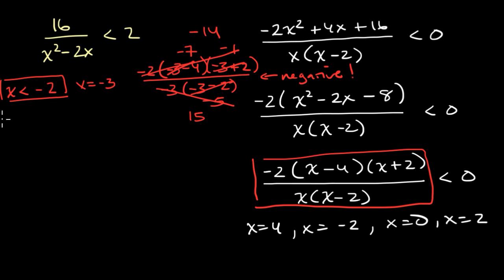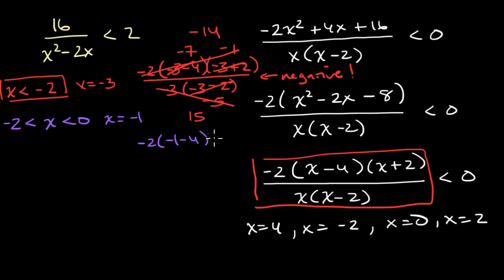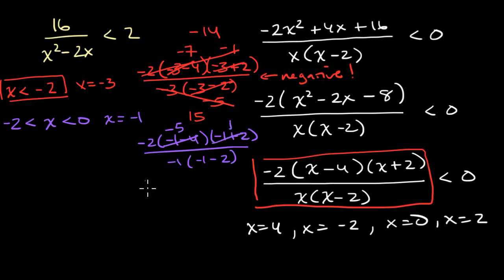Next, let's test the interval between negative two and zero using x equals negative one. We get negative two times (negative one minus four) times (negative one plus two), all over negative one times (negative one minus two). Numerator: negative two times negative five times one is positive 10. Denominator: negative one times negative three is positive three. Positive divided by positive is positive — not less than zero, so this interval is not part of our solution set.